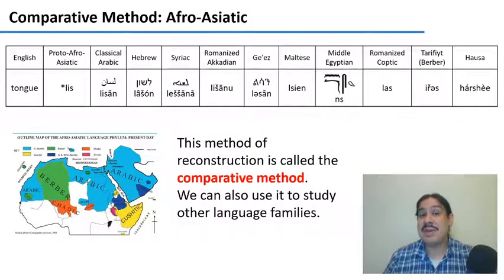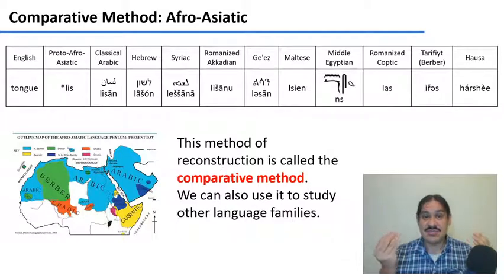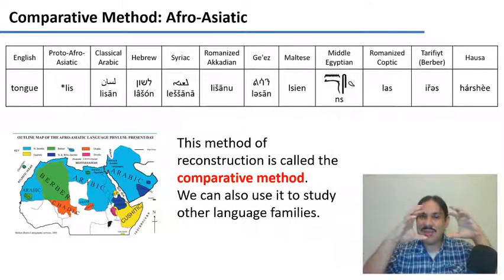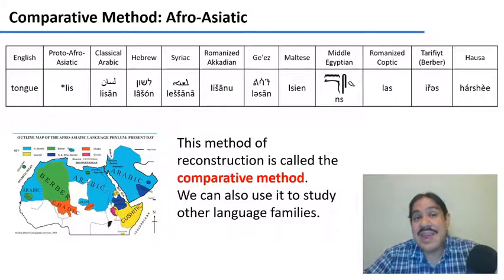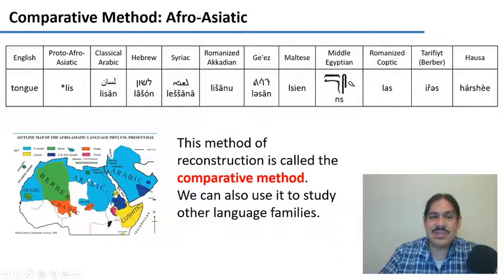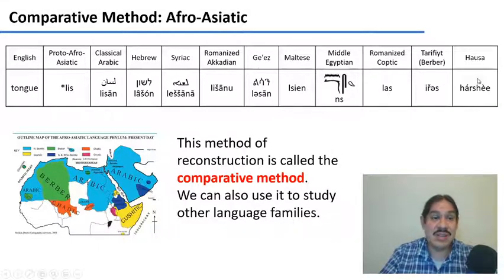This method is called the comparative method, and it was first used to establish the relationship between Latin, Ancient Greek, and Sanskrit, and to construct the Indo-European family. But it can be applied to any language family in the world. For example, there's a large family called Afro-Asiatic, which includes languages like Arabic, Hebrew, Gez from Ethiopia, Ancient Egyptian, and Hausa from Nigeria.